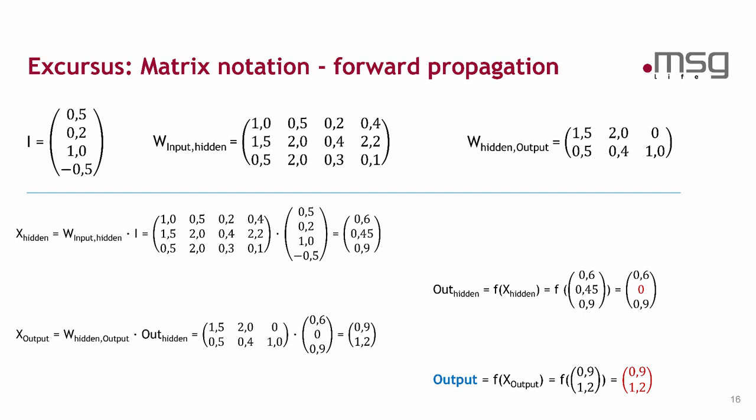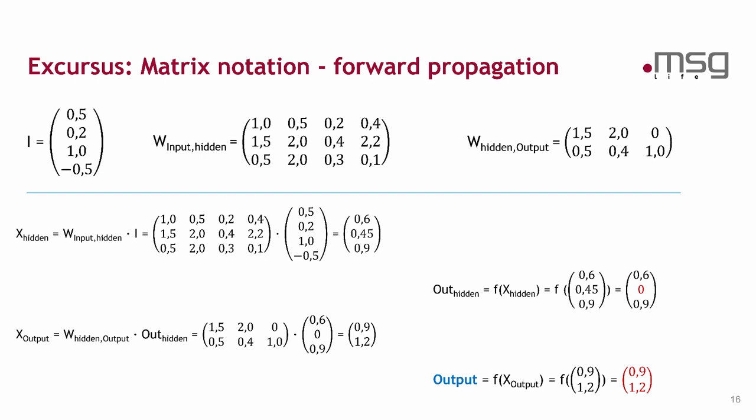In practice this is the way to calculate the output of an artificial neural network. And that's very nice because in the programming languages which are used for machine learning, R or Python, these languages are able to compute multiplication and calculation with vectors and matrices. And so it's very simple to program an artificial neural network with R or Python. And that we do in practice.